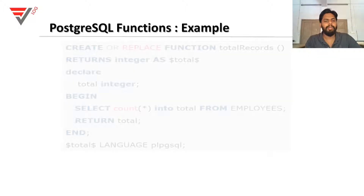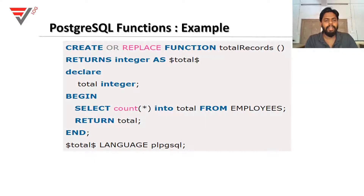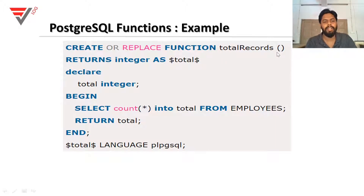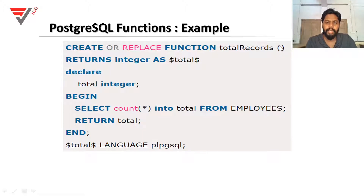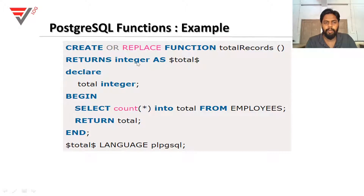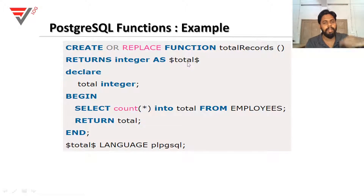So this function is created with CREATE OR REPLACE FUNCTION. The function is called 'total_record' — it returns the total count. The argument bracket is blank — no arguments are passed. You have to pass the argument in the bracket if needed. Here the function returns an integer. You can return the variable using AS — the total variable is written in the program.